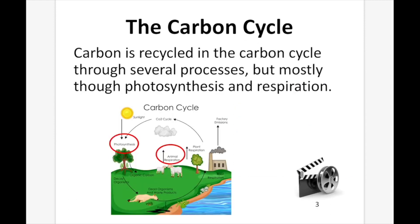Carbon is cycled through the carbon cycle mainly through photosynthesis and cellular respiration. Photosynthesis is when carbon dioxide is brought into plants and used to create organic carbon, which can be consumed by animals. Animals then release the carbon back into the atmosphere as CO2 via cellular respiration.